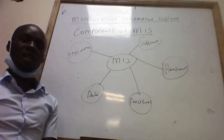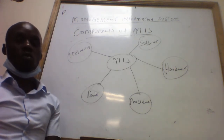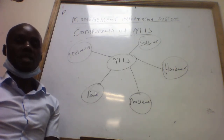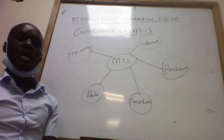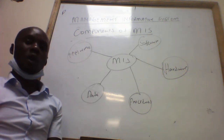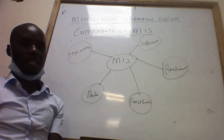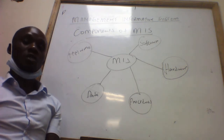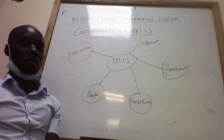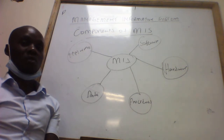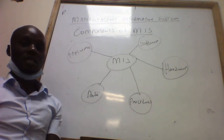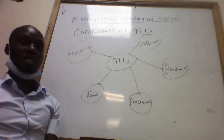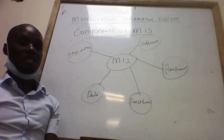Data is the raw material of a management information system. Data can be acquired from the external environment — for example in terms of customers' buying patterns. We want to see how customers prefer to buy items, what they base their decisions on in terms of age, preferences, and tastes. Then we acquire that data.